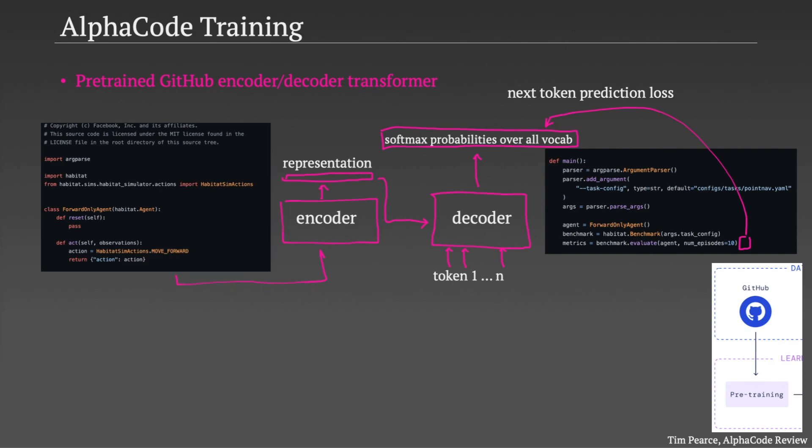These losses back-propagate through both the decoder and encoder. Though it turns out to be important to add a second loss just for the encoder. This is called a masked language modeling loss. Effectively, you blank out some of the tokens that are input into the encoder. And as a kind of auxiliary task, the encoder tries to predict which token was masked.